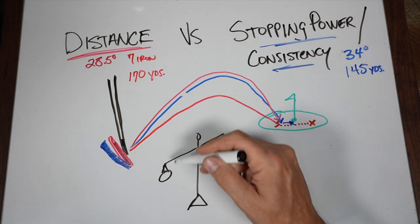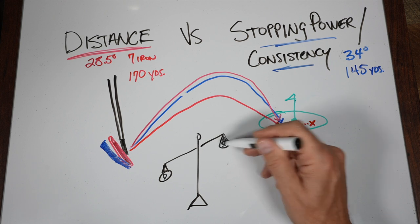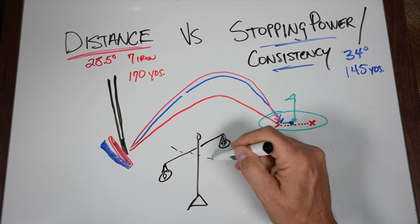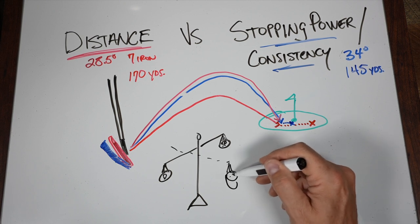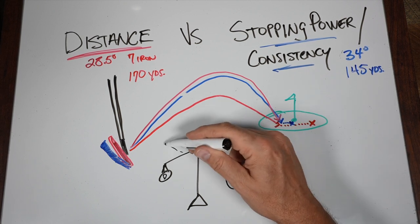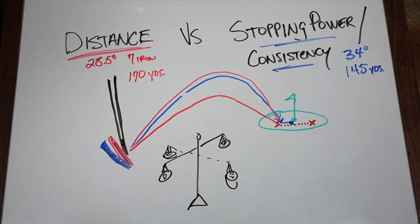Do you want more distance? Do you want more stopping power? Or do you want it the other way? Do you want more control, more stopping power, trajectory control, and can you live with a little less distance? The choice is yours.